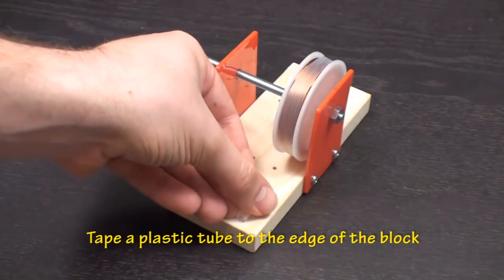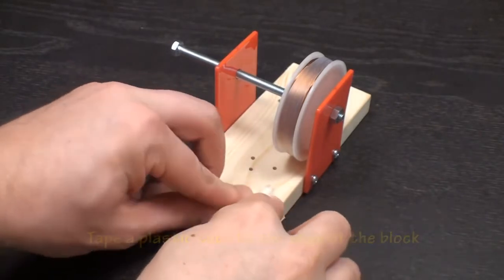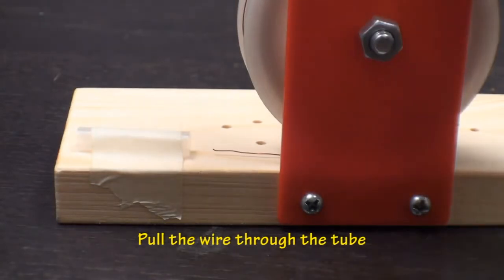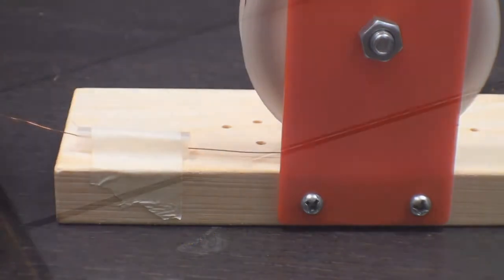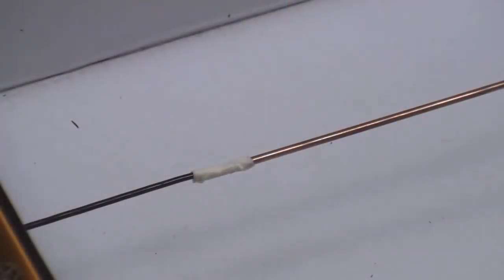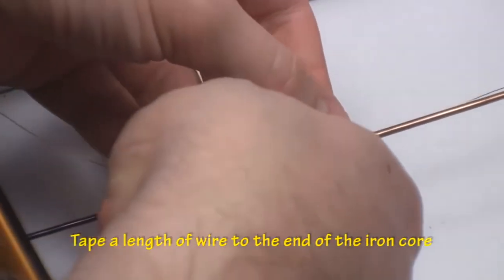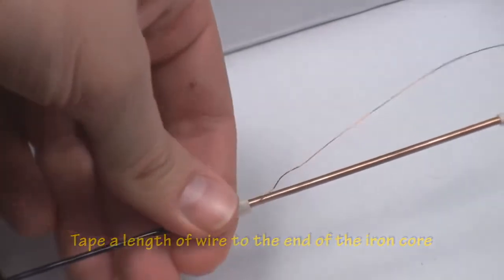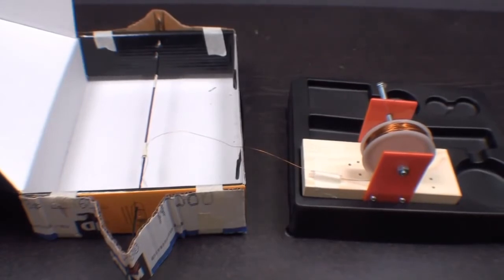Take a plastic tube and tape it to the end of the wooden block. Take the end of the magnet wire and pull it through the plastic tube. Tape a length of wire to the end of the iron core on the winding mechanism. Make sure to leave about six inches of extra wire as a lead. This setup will help to ensure an even unspooling of the wire.